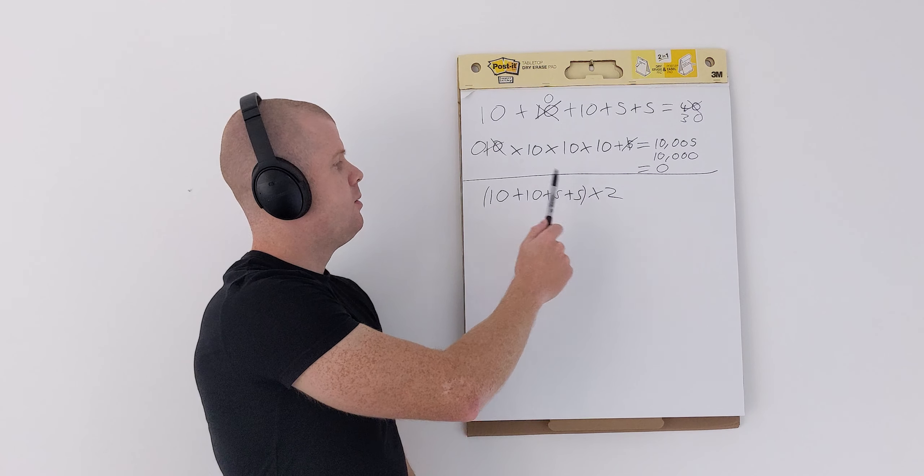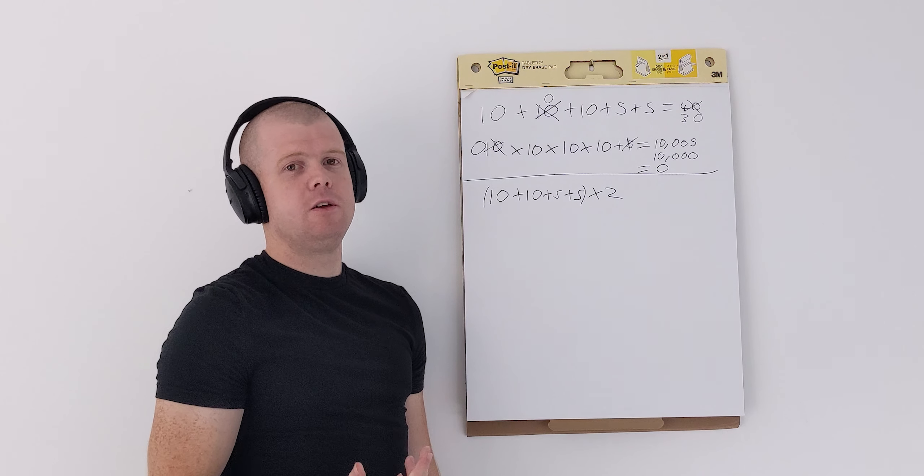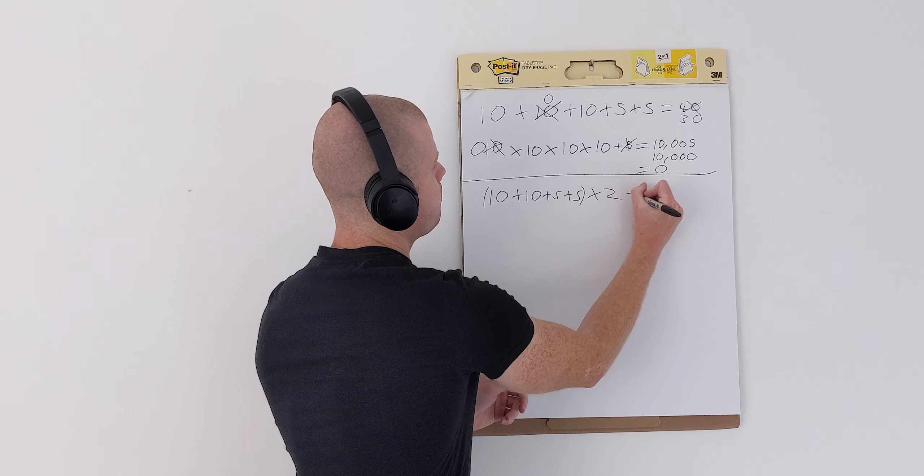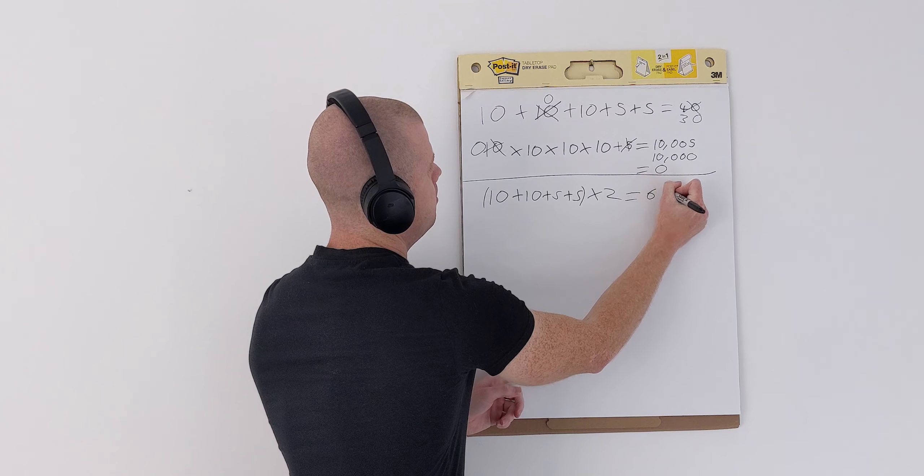So, overall, every part of the party, you could say, is better if we have good weather. So, our 30 becomes a 60.